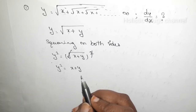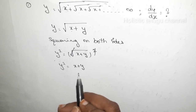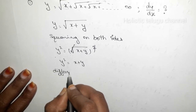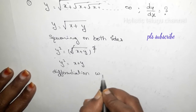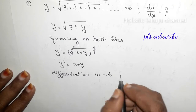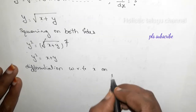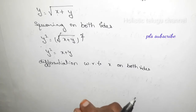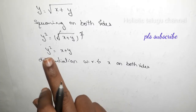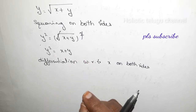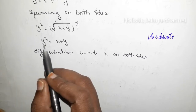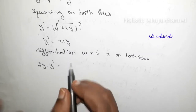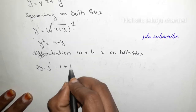Now we will do differentiation with respect to x on both sides. So with respect to x on both sides we have y squared equal to x plus y. Differentiating: y squared gives 2y into y dash, equal to differentiation of x which is 1, plus differentiation of y which is y dash.